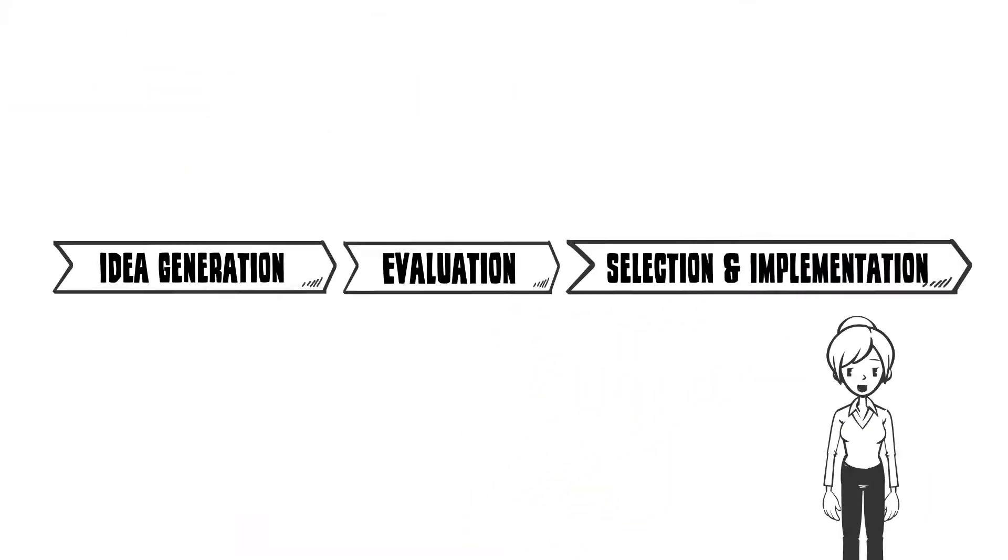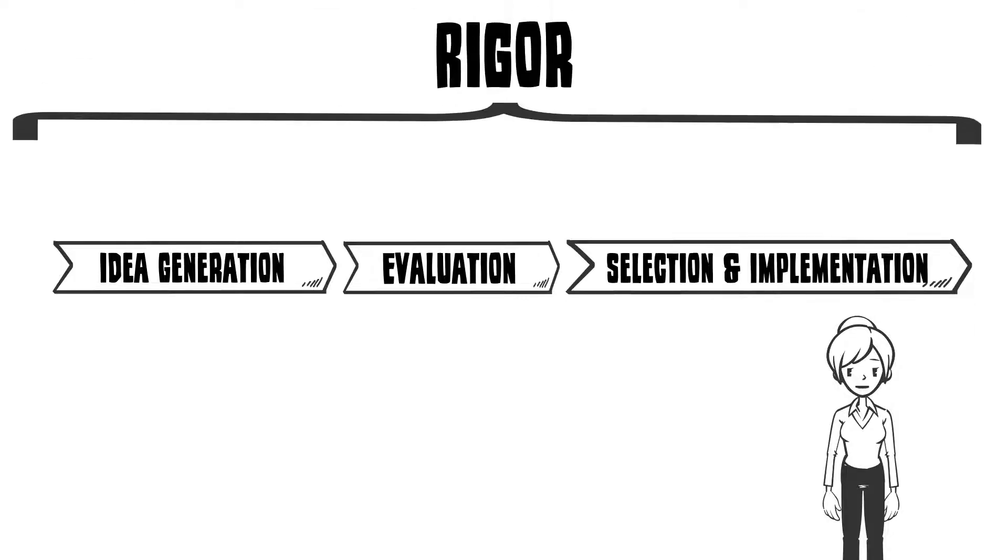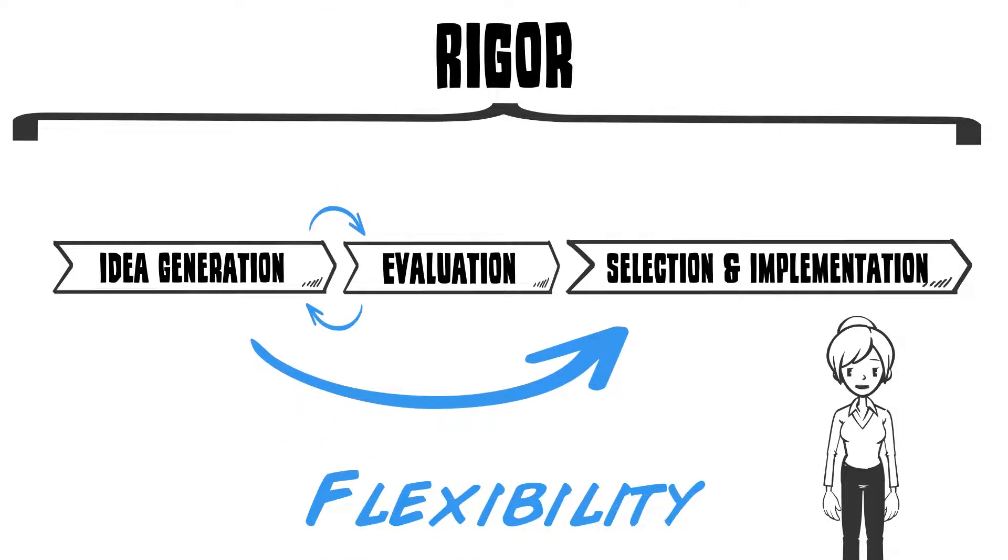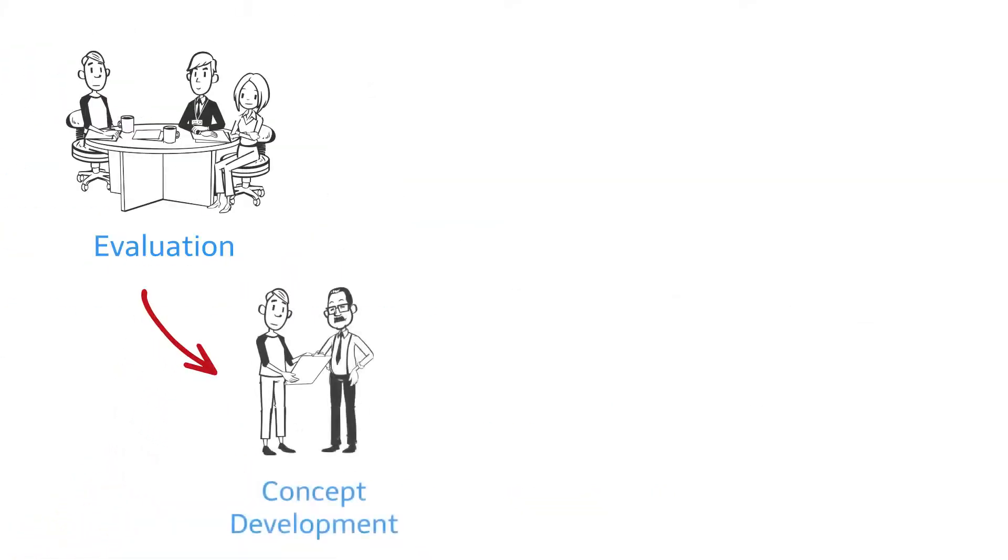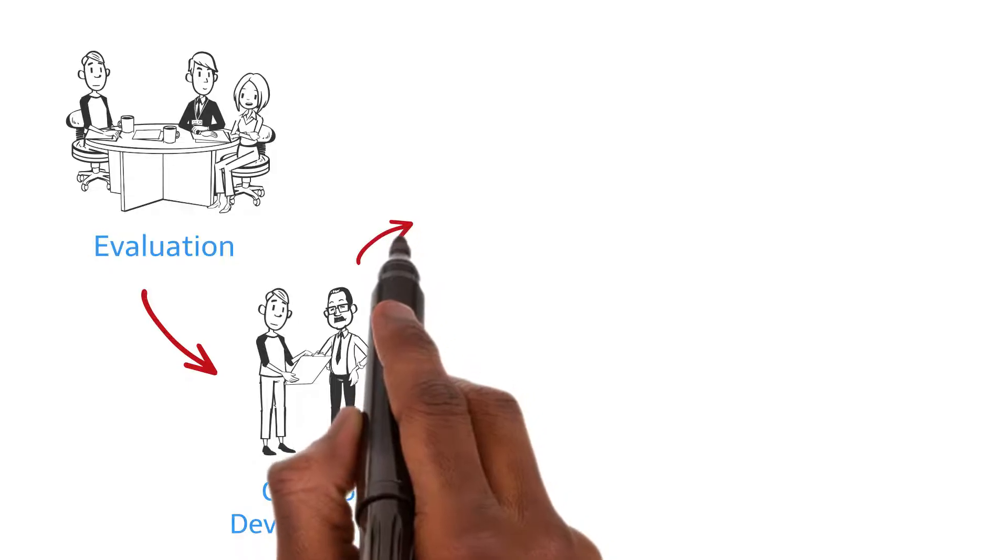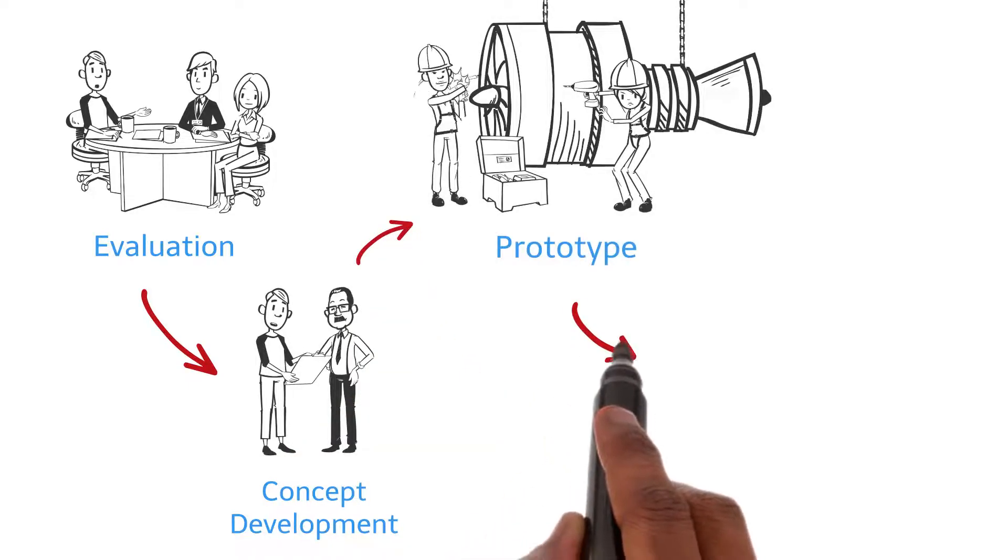A sustainable innovation program needs a well-defined process allowing for rigor and flexibility at the same time. You need to make sure that promising ideas are passed through to prototyping and implementation as quickly as possible. Responsibilities and workflows within the different phases of the process have to be clearly defined to filter out the best ideas and move them forward.